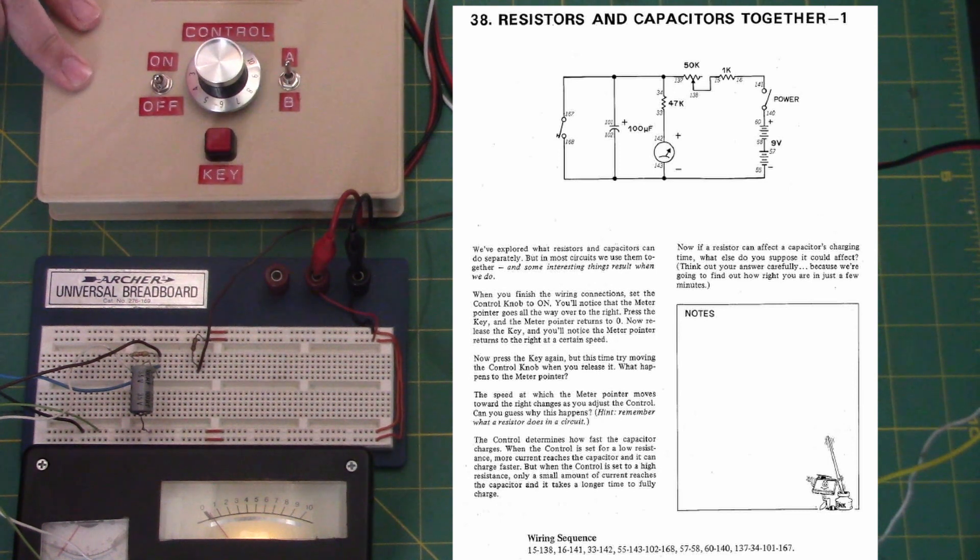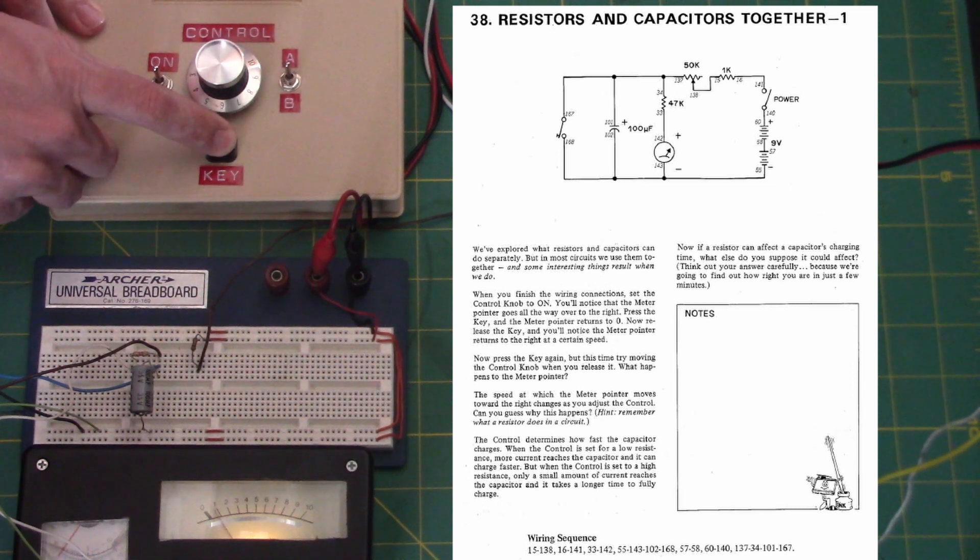When you finish the wiring connections, set the control knob to on. You'll notice that the meter pointer goes all the way over to the right. Press the key and the meter pointer returns to zero.